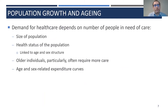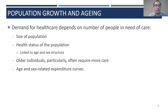Moving on to discuss our drivers in more detail, focusing first on population growth and aging: the plan for healthcare will depend on the number of people in need of care, influenced by the size of the population. But also important is the health status of the population, which is intimately linked to the age and sex structure. Older individuals particularly often require more care — they may be more prone to illness and multiple morbidities — and that will drive expenditure on healthcare.